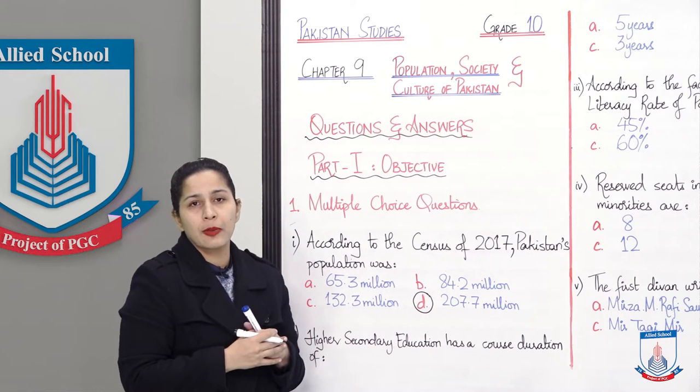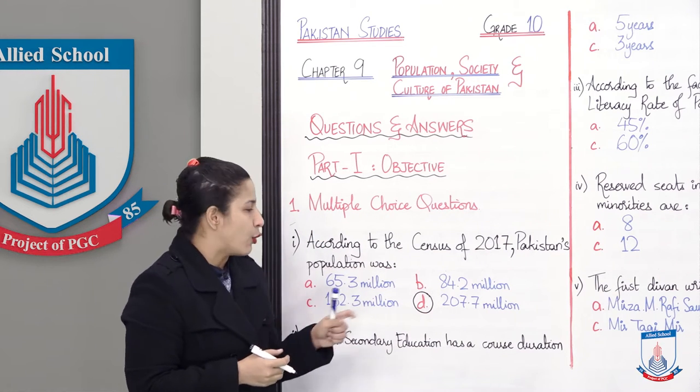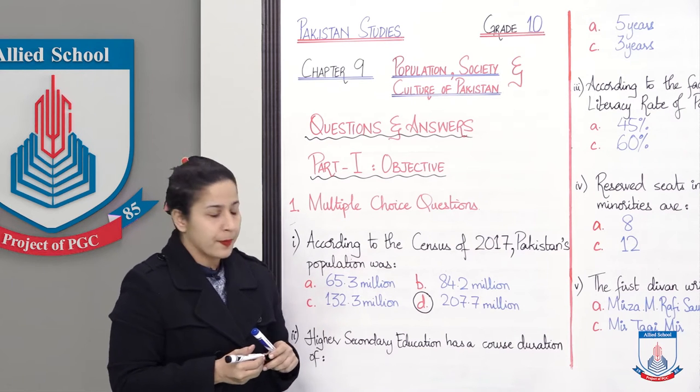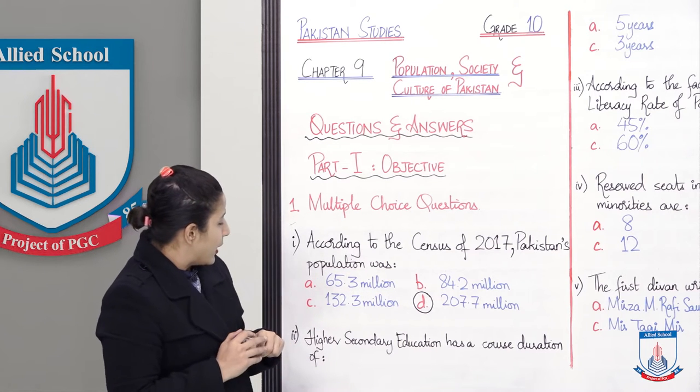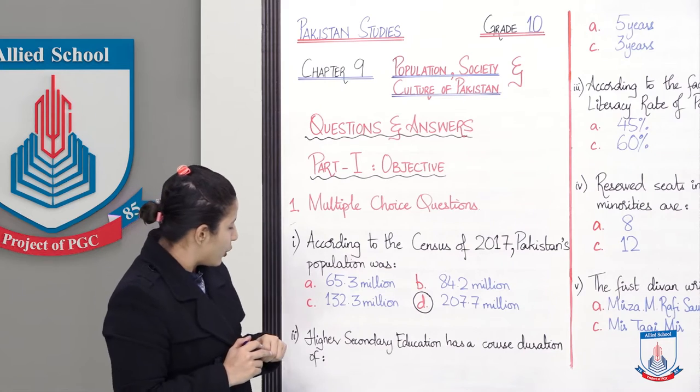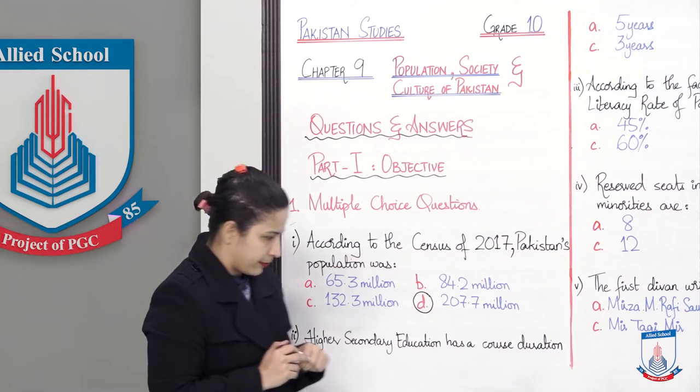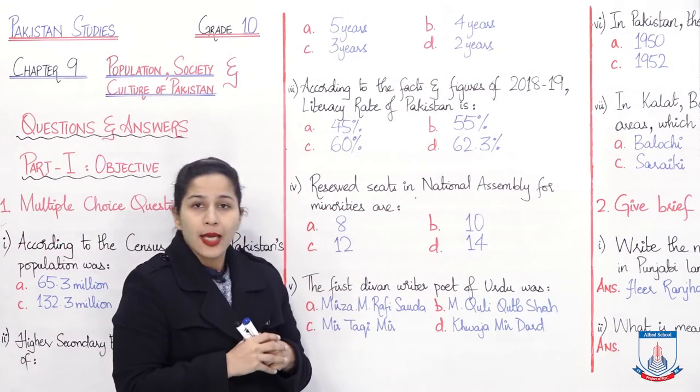According to this survey, the fact is that the population of Pakistan in 2017 was 207.7 million.